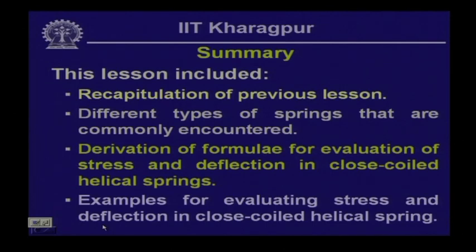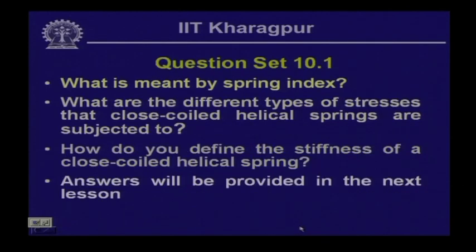To summarize: in this lesson we reviewed the previous lesson through Q&A on column stability, looked into different types of springs, derived formulae for stress and deflection in close coiled helical springs, and solved examples. Questions for the next lesson: What is the spring index? What are the different types of stresses in close coiled helical springs? How do you define the stiffness of a close coiled helical spring? The next lesson will cover open coiled helical springs.